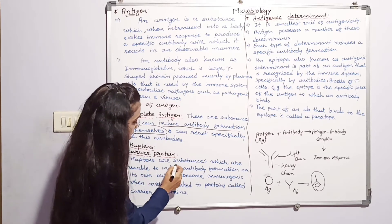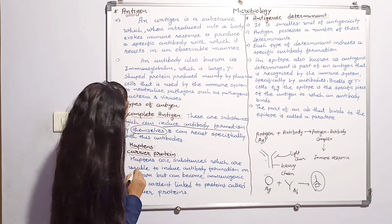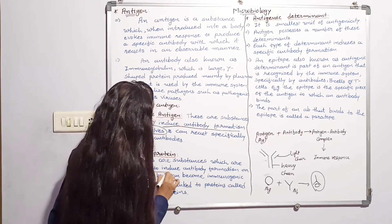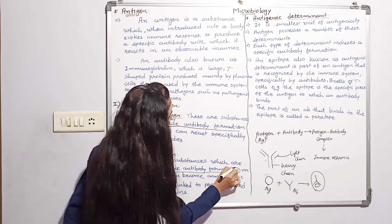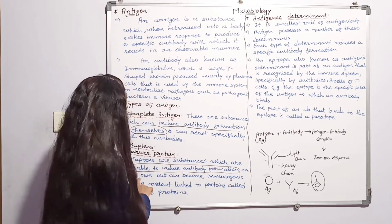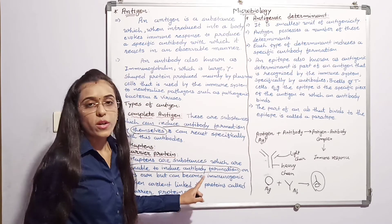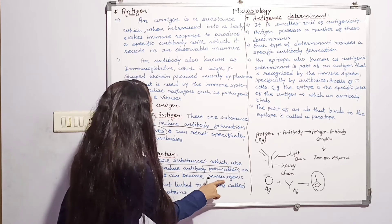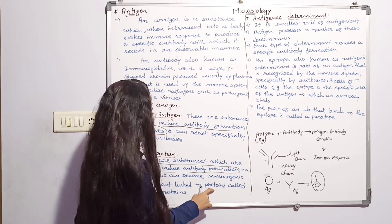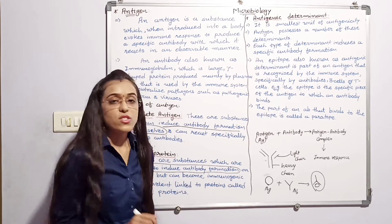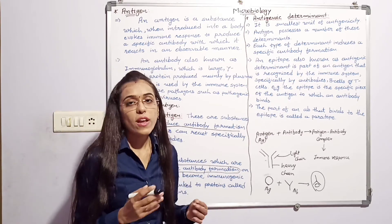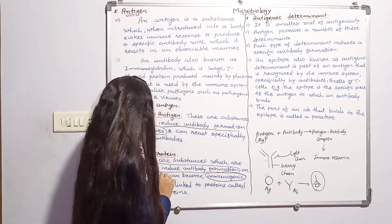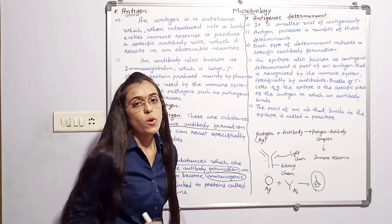Haptens are substances which need a carrier protein to induce the antibody formation. On its own, it can become immunogenic when covalently linked to the protein called a carrier protein. It is then capable to induce antibody formation.